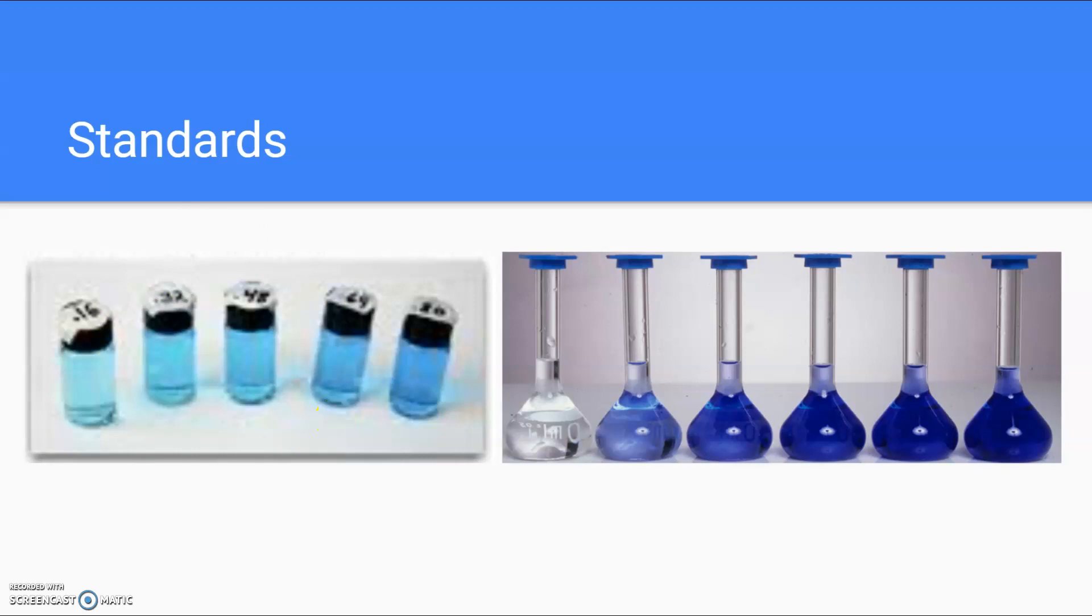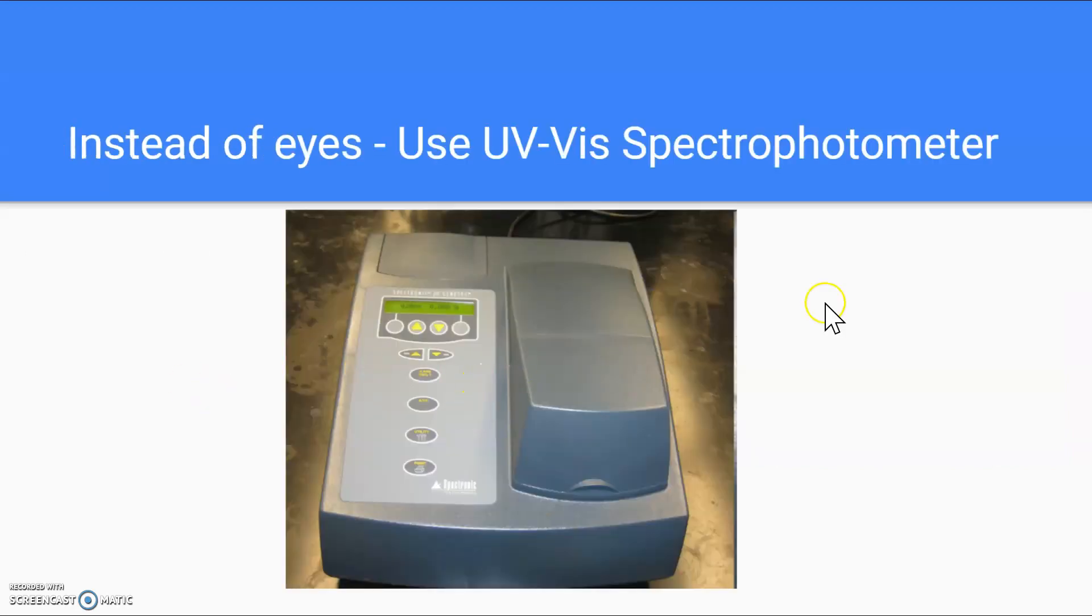You can eyeball this. And actually, your eyes are pretty good at seeing color. And you probably would get a pretty good answer just by eyeballing it and making a lot of standards. But instead of that, we are going to use an instrument, which does that for us. And that is called a UV visible spectrophotometer. And here's a picture of the one we're going to be using in class.